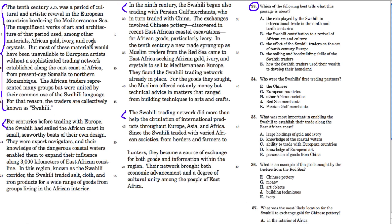Just from that, we can tell the answer. They're introducing the history of trade in the region of Africa, and specifically the effect of the Swahili on that period. It's a period where there was cultural and artistic revival in European countries because the Swahili traders were able to provide them with materials — gold, ivory, and rock crystals — to actually make this cultural and artistic revival.